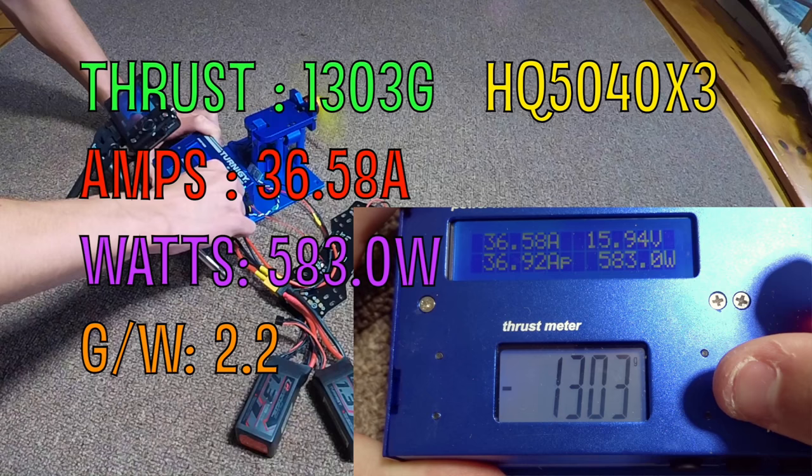Wow, those results were not anything like I expected. 1300 grams of thrust—I was expecting 1100. That's an insanely high number, pretty much top performance for even 2206 motors.